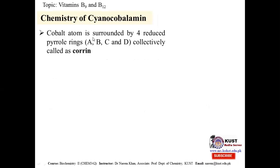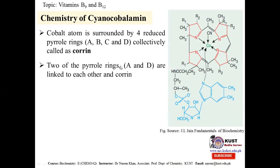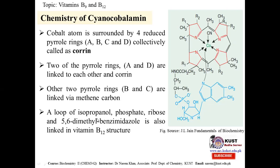In cyanocobalamin, the cobalt atom is surrounded by four reduced pyrrole rings — A, B, C, and D — collectively known as corrin. Cobalt sits at the center, and rings A and D are linked directly to each other. Rings B and C are linked via methylene groups. There is also a loop consisting of isopropanol, phosphate, ribose, and 5,6-dimethylbenzimidazole linked to the vitamin B12 structure.